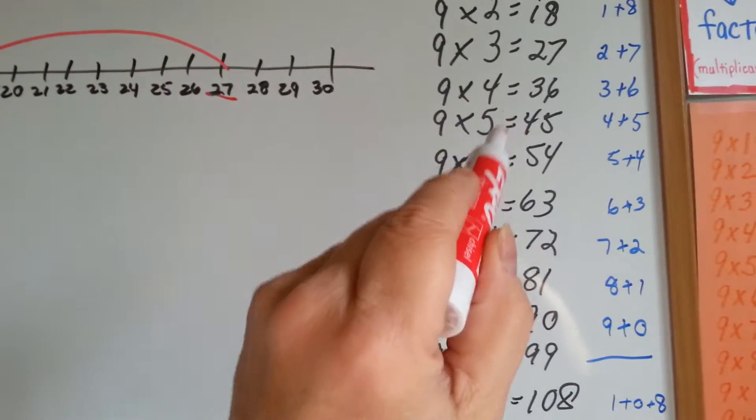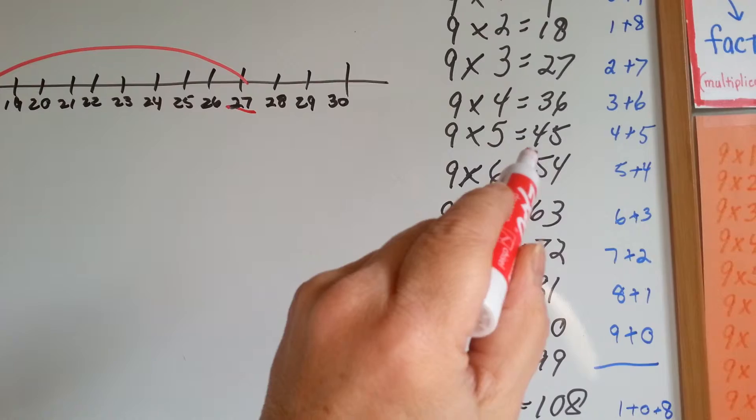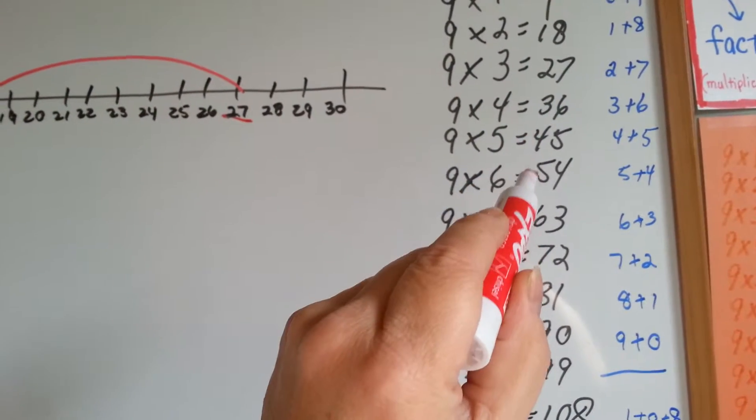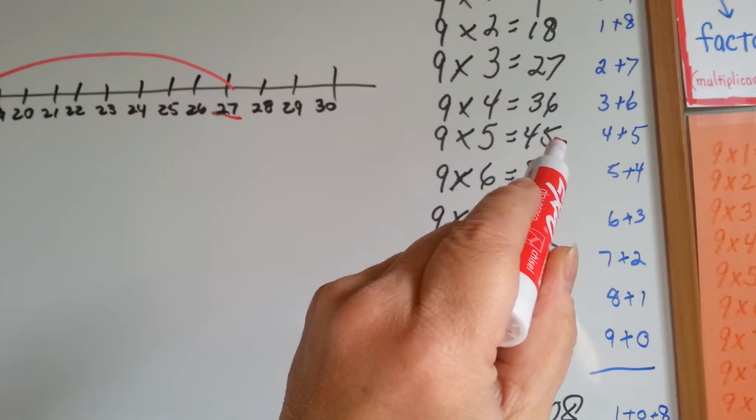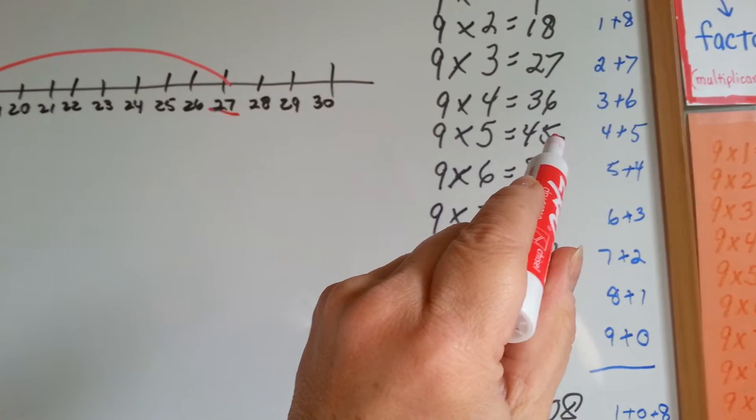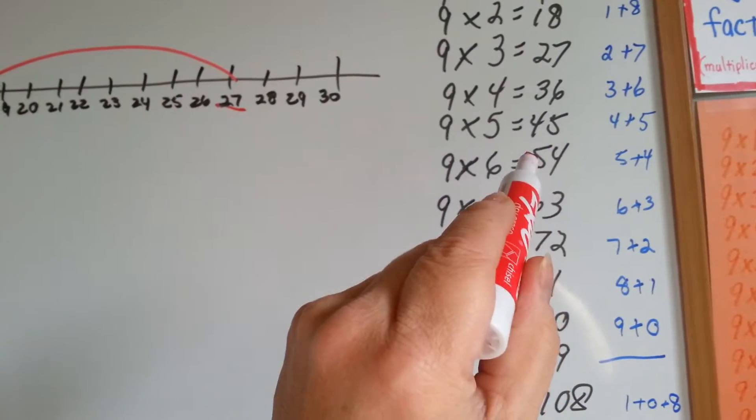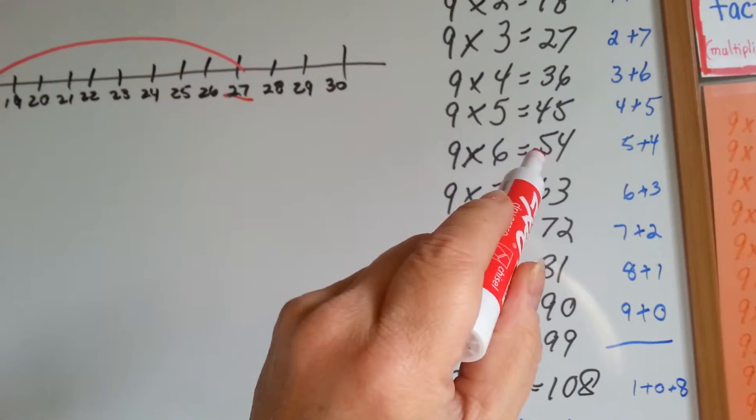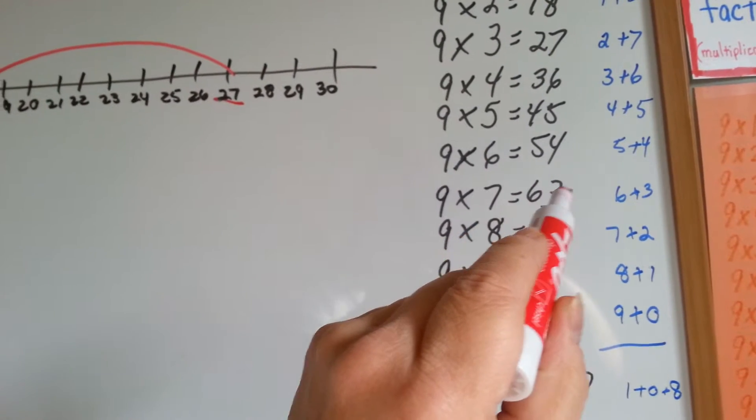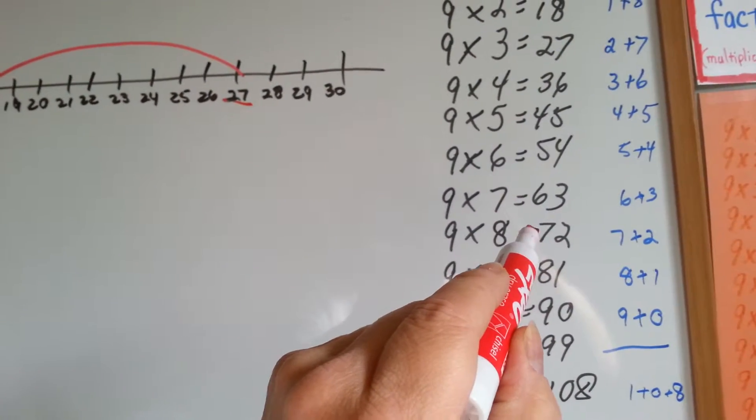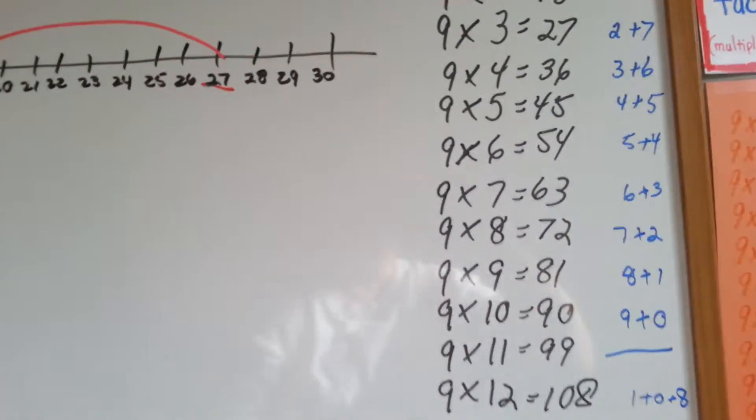So, if you know that 9 times 5 is 45 and there's a 4 in the tenth place, then you know that 9 times 6 has to start with a 5. And if there's a 5 in the ones place for the one you know, then the next one's going to have to be a 4 because it goes down. This one goes up, that one goes down. That means the next one has to be a 6 and the next one has to be a 3 because it's going down, it's going up. See? It went up to 7, it went down to 2. It went up to 8, it went down to 1.